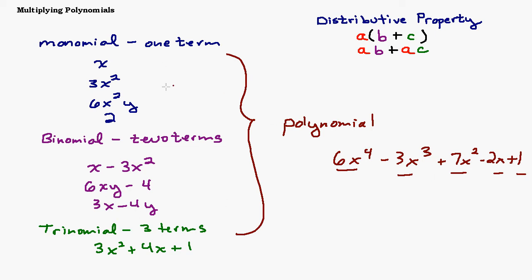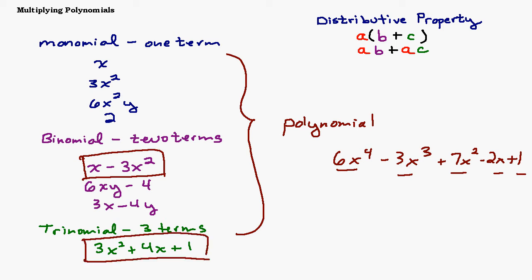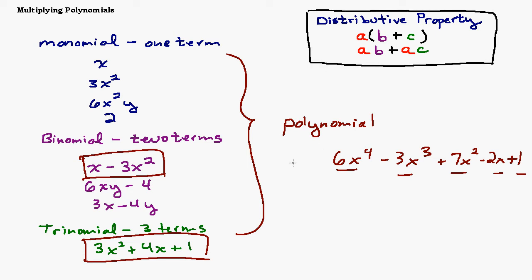What we want to do is talk about how we would multiply any of these together. Multiplying is a little different from adding or subtracting, which are just combining like terms. The key tool here is the distributive property — this is the bread and butter of multiplying polynomials. You've probably already used it to multiply a monomial times any of these other things.